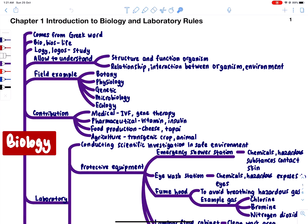Biology allows us to understand the structure and function of organisms. Each organism has its own structure, with names for each part, and each part has a function. For example, the eye has a structure — each part of the eye has a name and a function. For example, the retina: the light or image will focus on the retina, and the retina will convert that stimulus into an electrical impulse sent to the brain so the brain can process what is in front of that human.